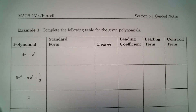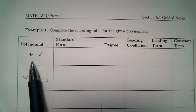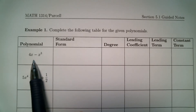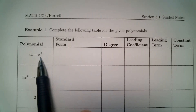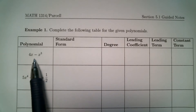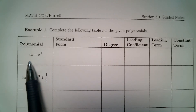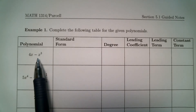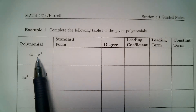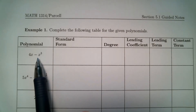For each polynomial, we're going to write it in standard form if it isn't already, state its degree, leading coefficient, leading term, and constant term. As we do that, you will get an idea of what each of these words or phrases means. Here is the first polynomial: 4x minus x cubed.